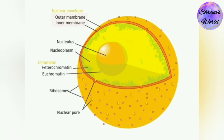The inner membrane contains proteins that rearrange the nucleus and chain the genetic material in position. The nuclear lamina is the attachment of proteins and fibers that are linked to the inner membrane. It provides structural support to the nucleus, assists in DNA repair, controls cell cycle events such as cell division, and also DNA replication.